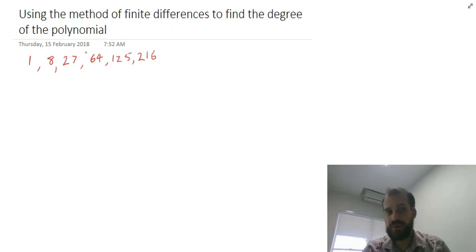You've got a sequence of numbers: 1, 8, 27, 64, 125, 216.